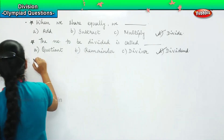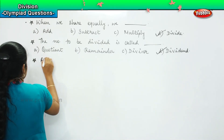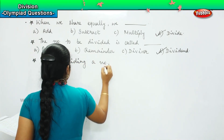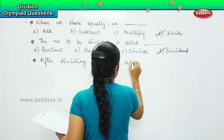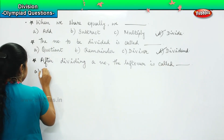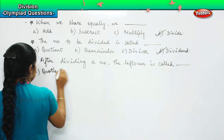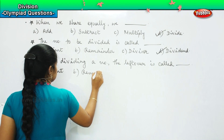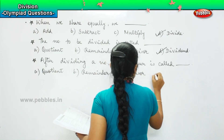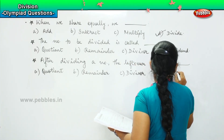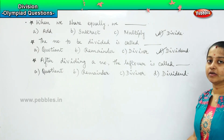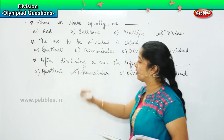So what is the answer? The number to be divided is what? Very good. It is dividend. The number which will divide the number is called as the divisor. The next question: after dividing a number, the leftover is called as ___. Your options are: quotient, remainder, divisor, and option D, dividend.